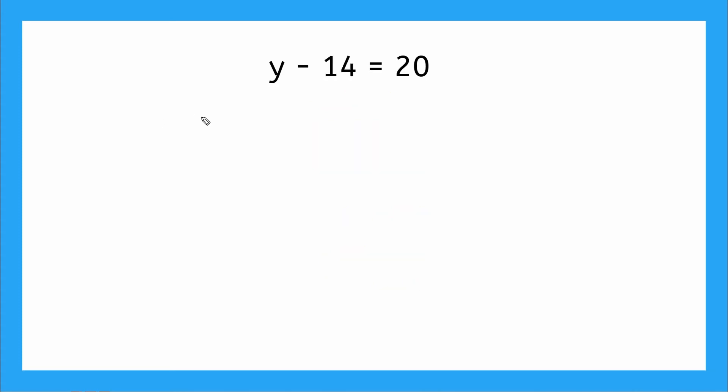So our next example says y minus 14 is equal to 20. And what are we doing? We're solving for y here. So that means we need to get y all by itself and I need to get rid of this minus 14. How do I undo a minus? Yeah, now I'm going to add, but if I'm minusing 14, that means I'm going to add 14.